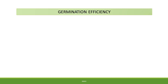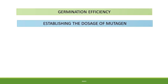The process of chemical mutagenesis commences with germination efficiency — this determines the number of seeds which will germinate per batch of the specific experiment. The second aspect is to establish the dosage of the mutagen. Too high dosages can result in an increased degree of mortality, whereas too low dosages may lead to a reduction in the number of mutants.